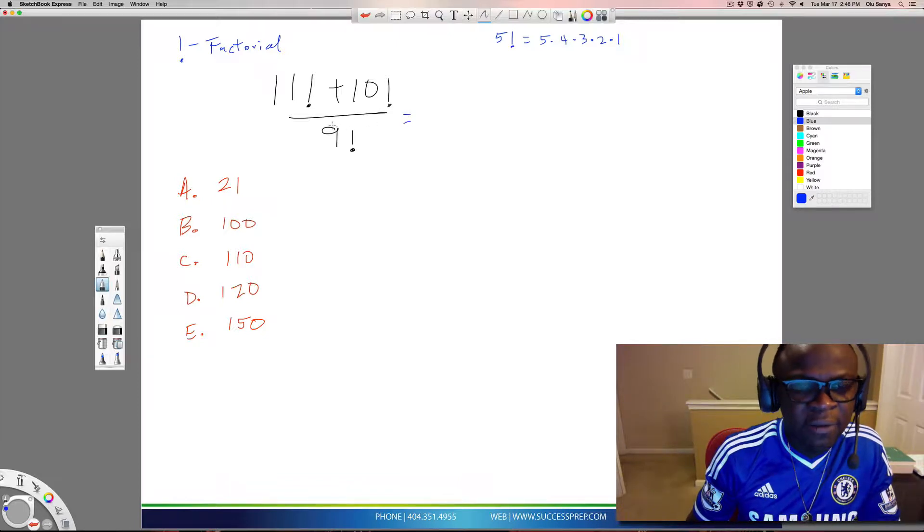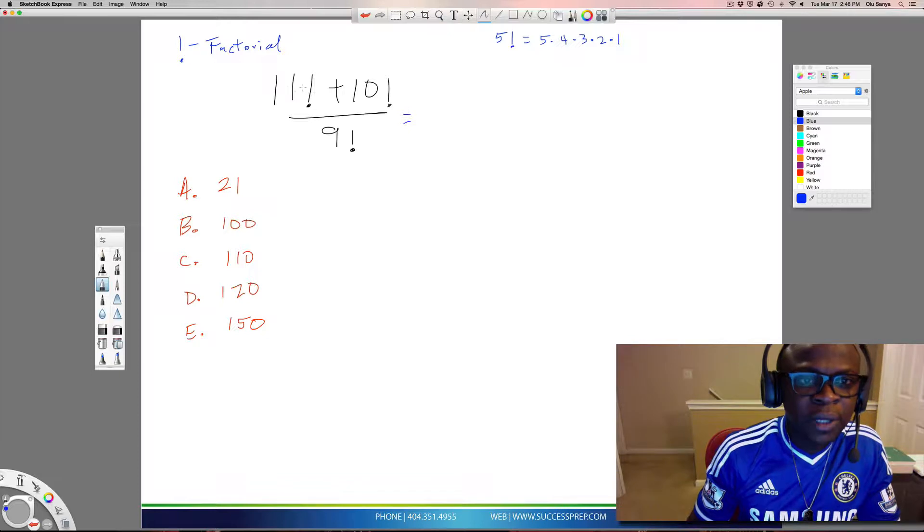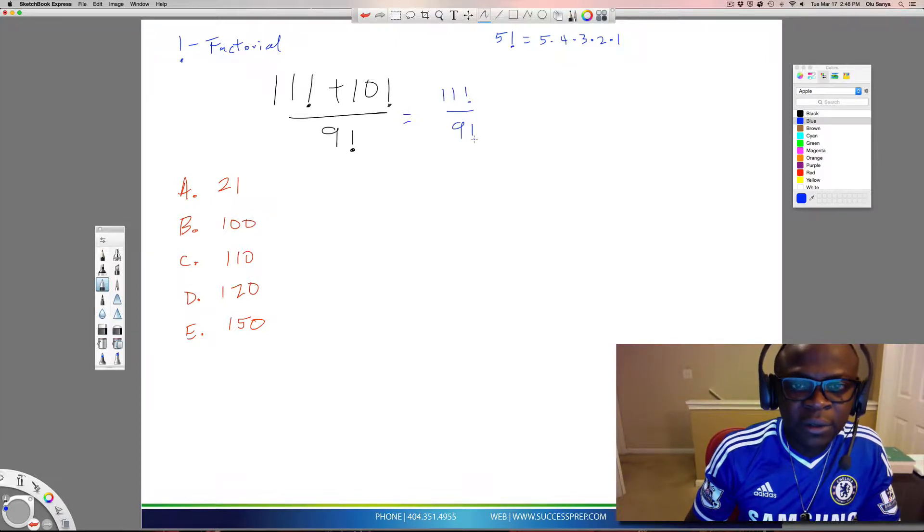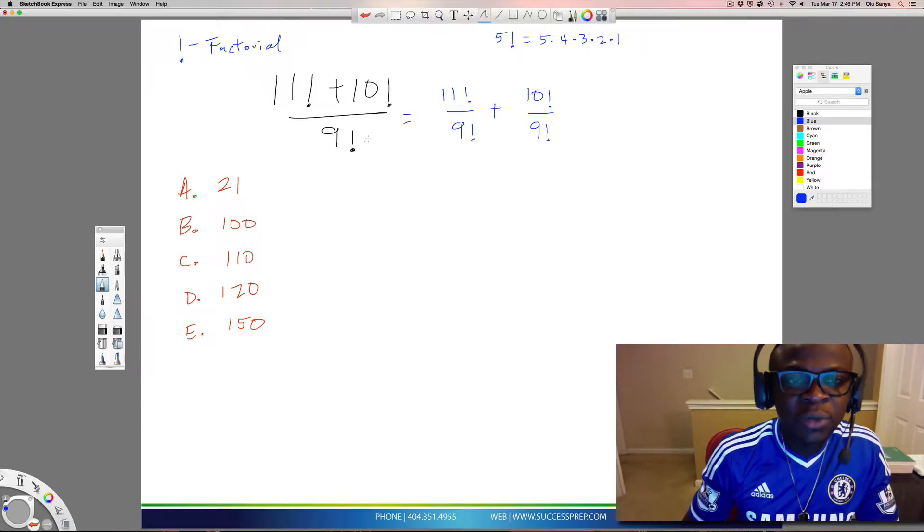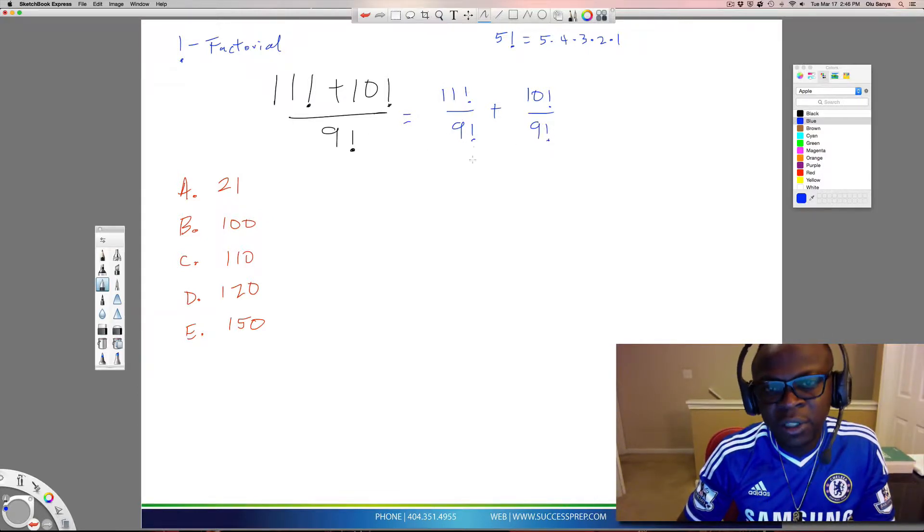In math, anytime you have a number at the bottom, just one number, and multiple items at the top, you want to divide this 9 under each term. So I'm going to rewrite and simplify this as 11 factorial over 9 factorial, and then also 10 factorial over 9 factorial.